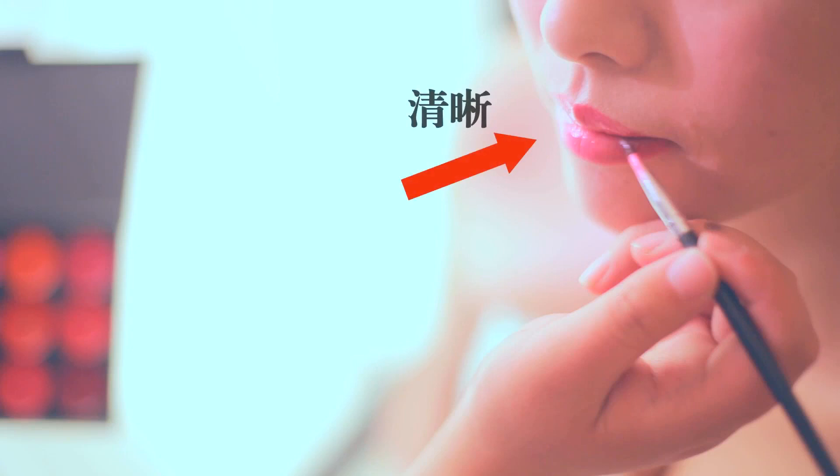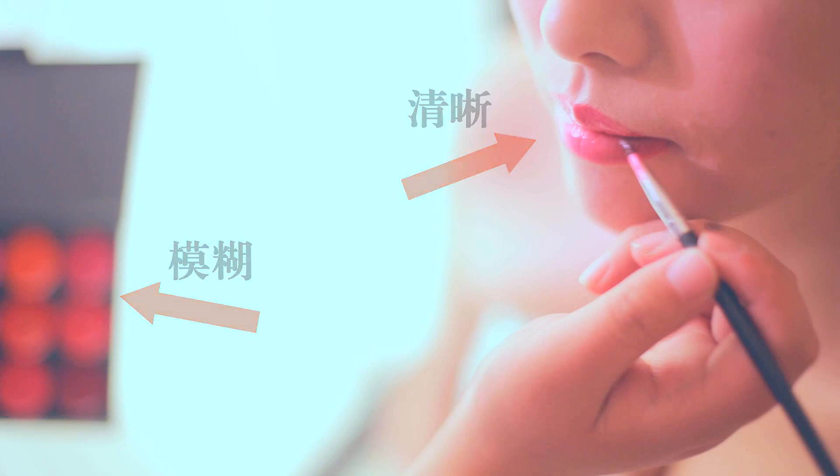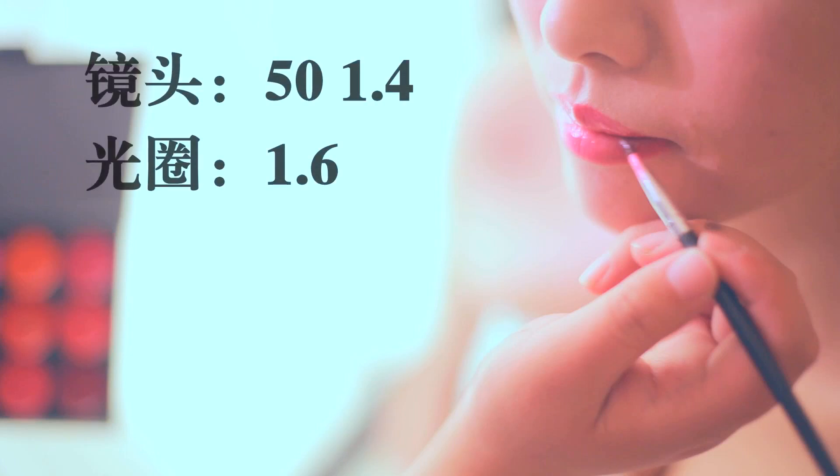In the next shot, the cinematographer moved in even closer for a tight close-up. We can see her lips and nose area are sharp, while the lipstick palette held very close becomes very blurred. Because the lipstick palette has very vivid colors — if it were sharp, those bright colors would steal attention from the whole shot. By blurring it, you achieve excellent layering. When shooting lipstick application, make sure the lipstick palette doesn't dominate the frame. The aperture reached f/1.6.